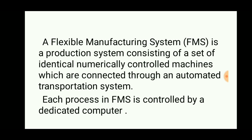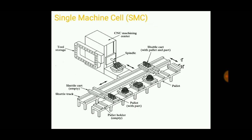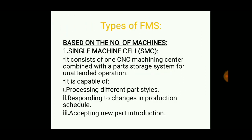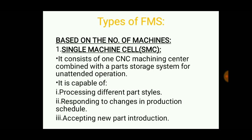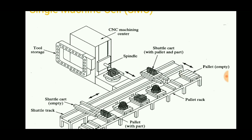The types of FMS are: first, the Single Machine Cell. It consists of only one CNC machining center combined with a parts storage system for unattended operation. It is capable of processing different part styles — that is, it can be used to produce different parts at a time — responding to changes in production schedule and accepting new part introduction, because the CNC machine works based on coding.